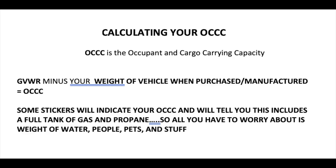How do we calculate the OCCC? They're going to take that GVWR — the gross vehicle weight — which was 11,030, and subtract the vehicle weight when purchased, which included the full tank of gas and propane. So for this consideration, we would just have to worry about the weight of water that we add, people, pets, and stuff, since gas and propane is already in their calculations for the vehicle weight.